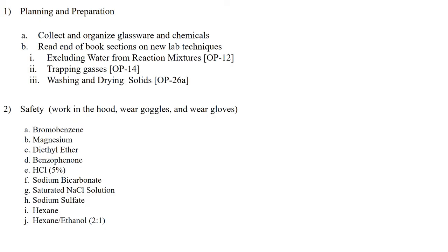As always, we're going to first do some planning and preparation. We're going to collect and organize all our glassware and chemicals which you'll see in the experimental video. We also need to read some end-of-the-book sections on lab techniques. Excluding water from chemical reactions is an important organic technique because many organic chemical reactions are sensitive to water. We also need to trap some gases and we're going to be doing some trituration, which is washing and drying of solids in OP-26A.